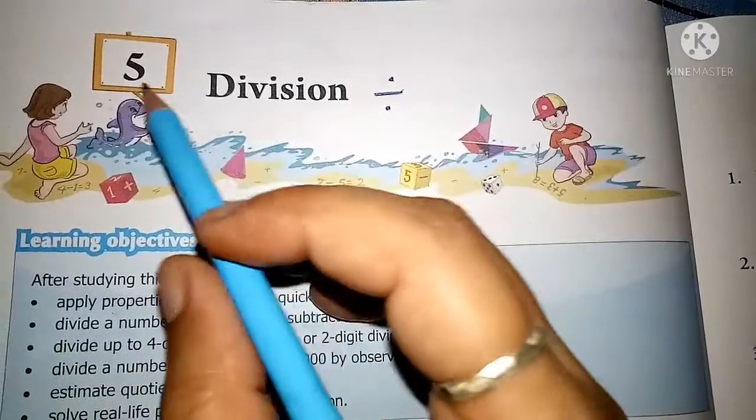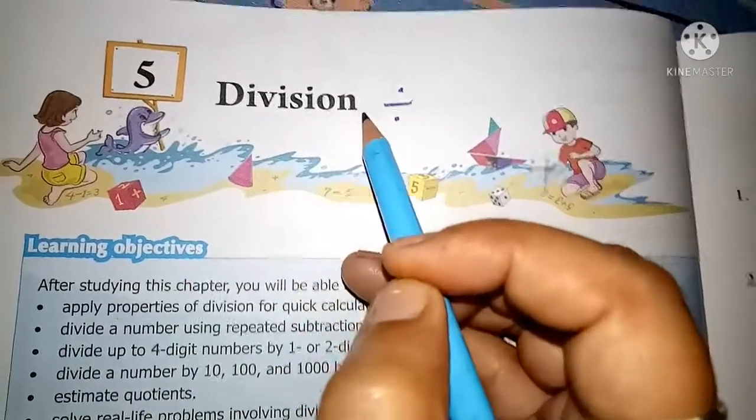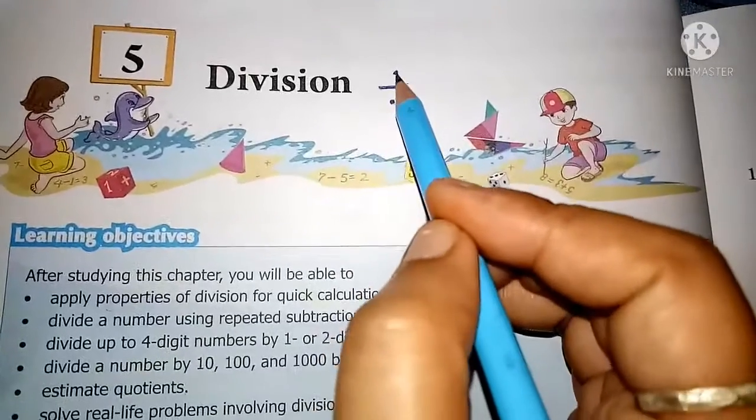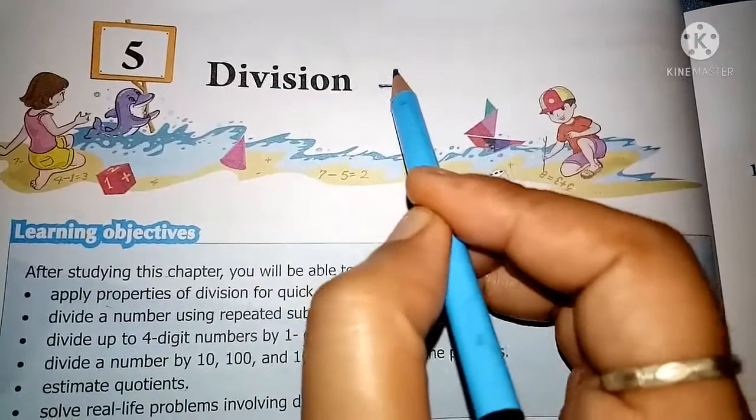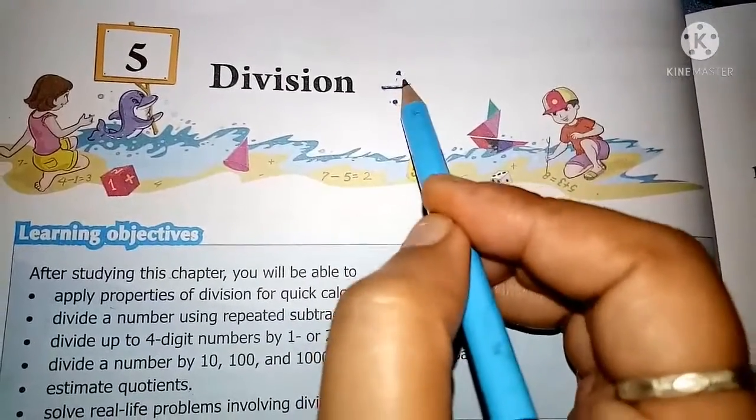Kids, today we are going to do chapter number five, division. Division sign is a dash with upper two dots.